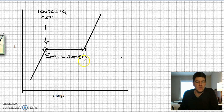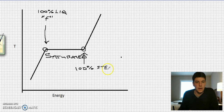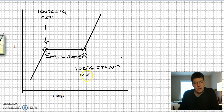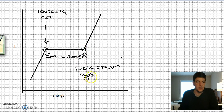Over here we have another point: 100% water comes in, this is where it boils, and over here is 100% steam. We would still consider it saturated at that point, and this has the identifier G — I think of that as gas, so steam being a gas gives us our G properties.